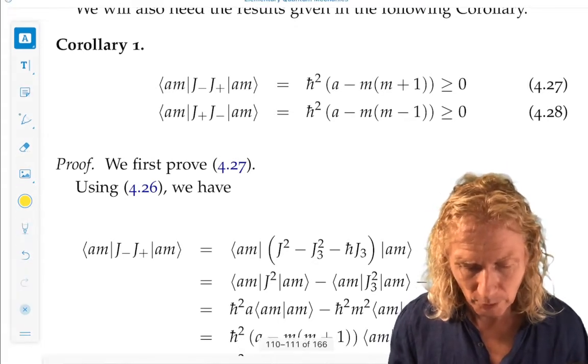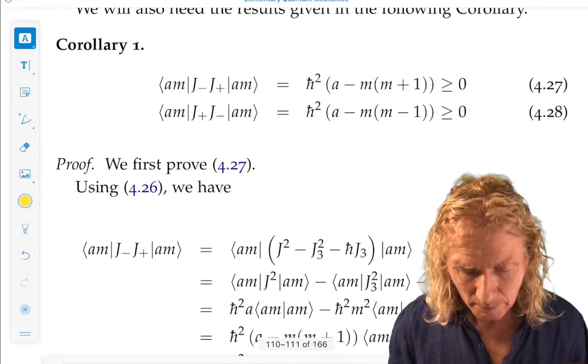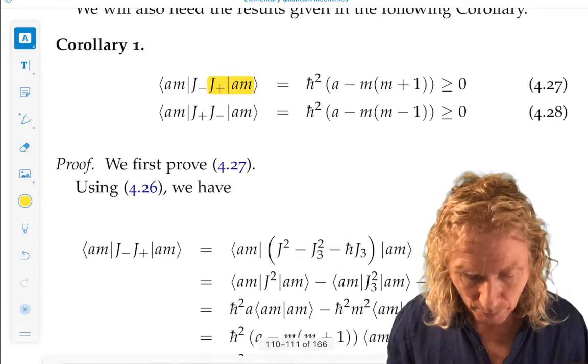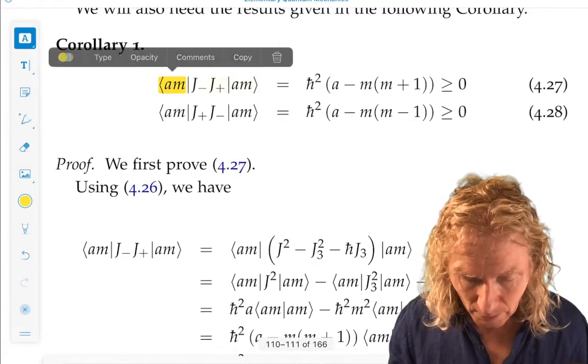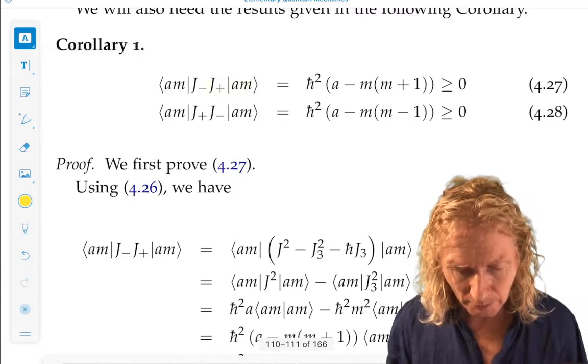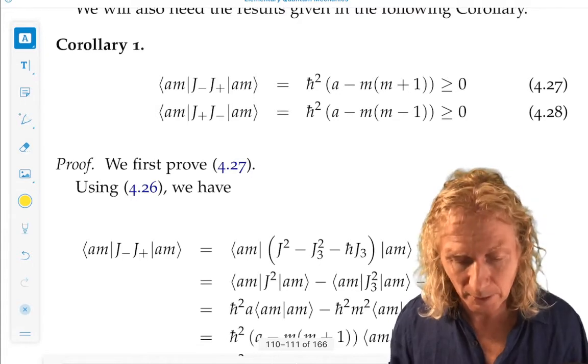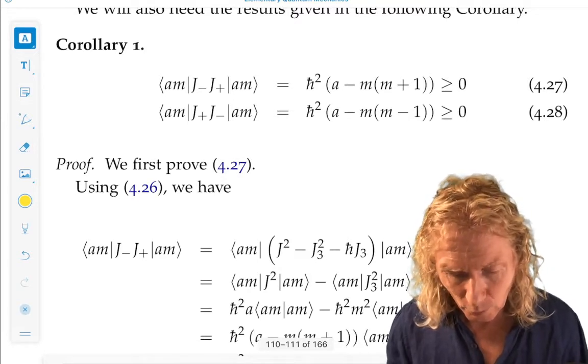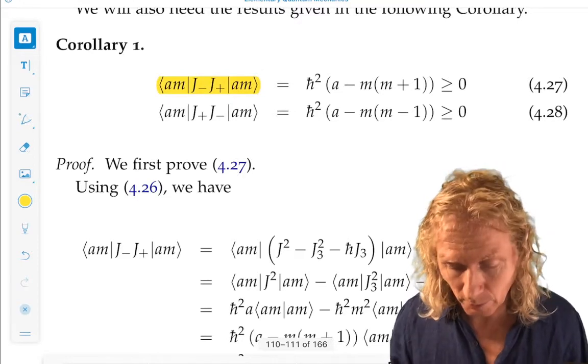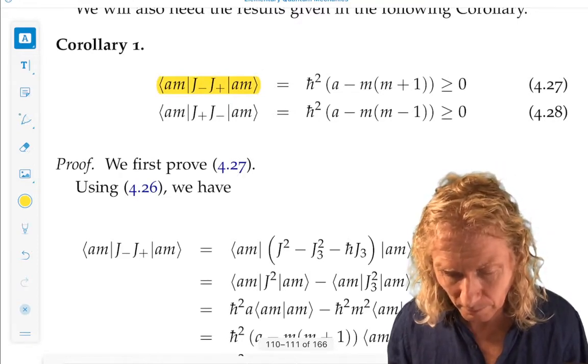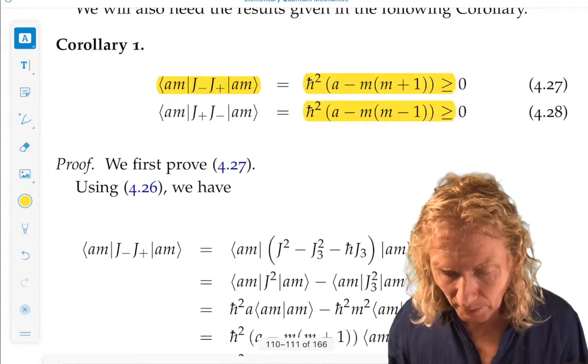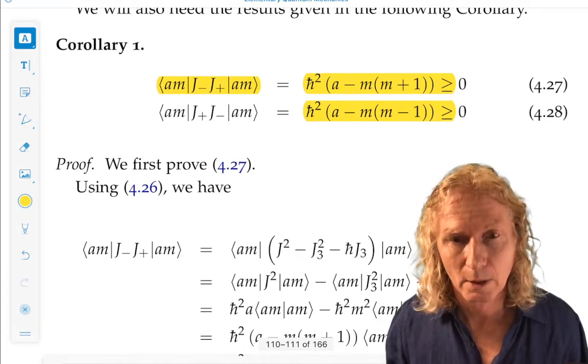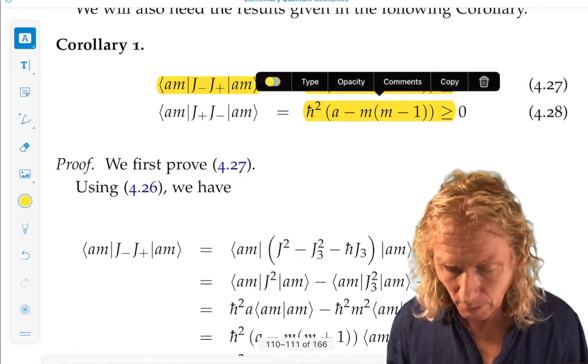So what are they first of all? Ket am is a simultaneous eigenvector of j squared and j3. And we have the bra on the left. Between the two, we have the ladder operators, j plus, remember, is j1 plus ij2, and j minus, j1 minus ij2. So the result is, these are equal to numbers, real numbers, and we see that on the right hand side. And we see that they're functions of a, the eigenvalue of j squared, and m, the eigenvalue of j3. Now, they're both greater than or equal to zero.